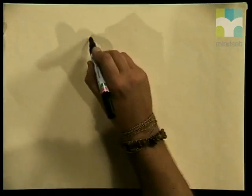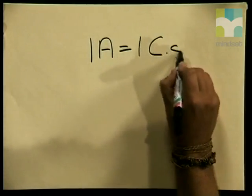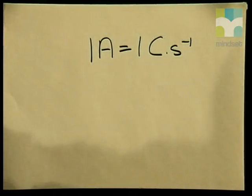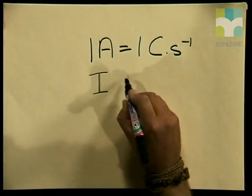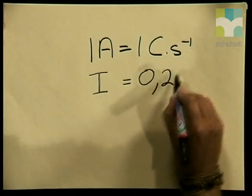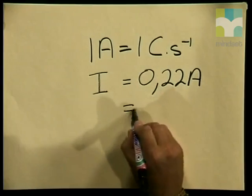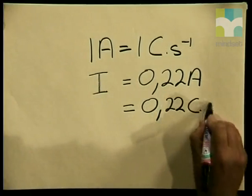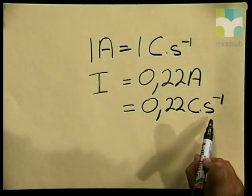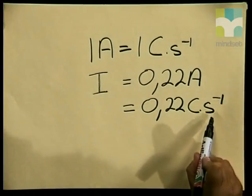Can you still remember what it means when the ammeter reads the current in amperes? This means that 1 ampere is equal to 1 coulomb per second. So in our demonstration, the ammeter reading was 0.22 amperes. In other words, current I is equal to 0.22 amperes, or we can write it as 0.22 coulombs per second. Remember that s to the minus 1 means per second. From the ammeter reading of 0.22 amperes, we know that 0.22 coulombs of charge pass through the conductor in one second.